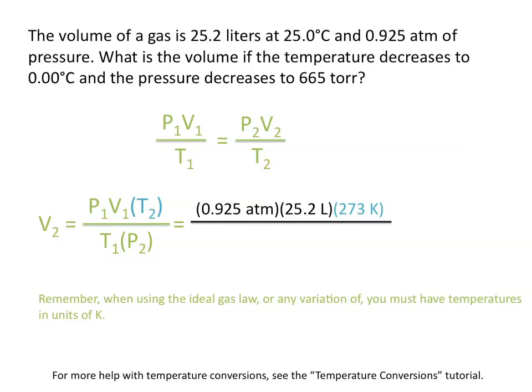Remember when using the ideal gas law or any variation, you must have temperatures in units of kelvin. We divide this by the initial temperature, 298 kelvin, multiplied by the final pressure, 665 torr.